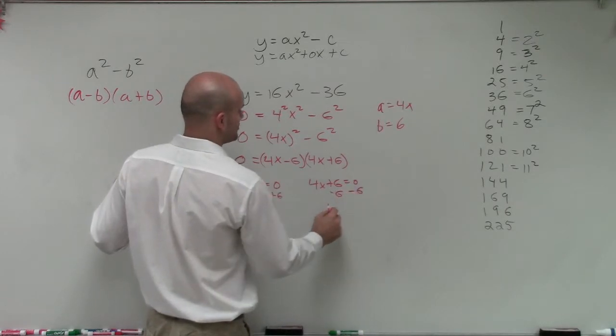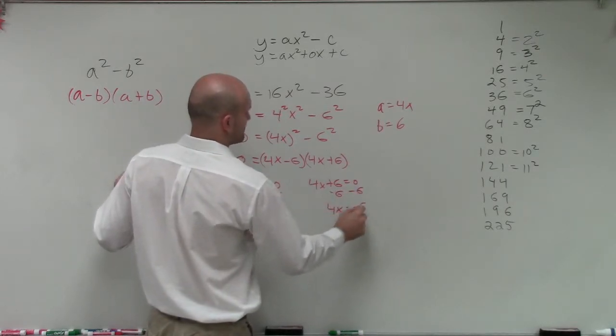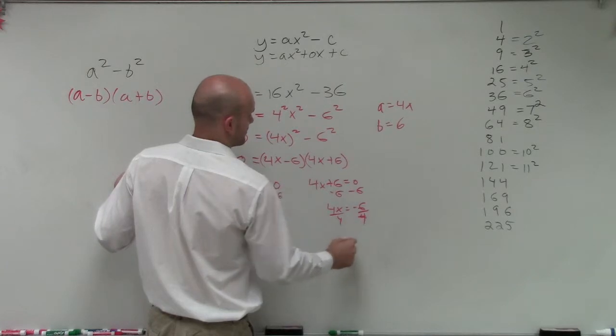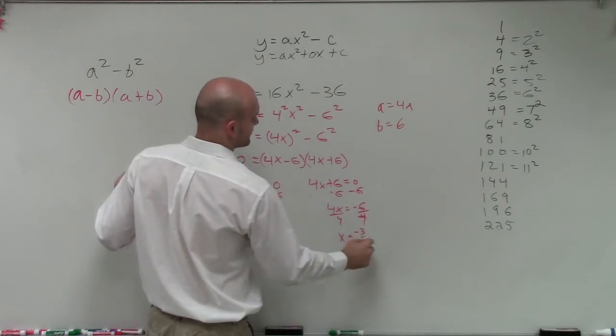Now, I'll subtract 6 on both sides. Then I'll divide by 4. And therefore, x equals negative 3 halves.